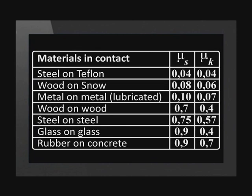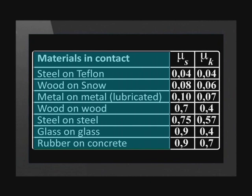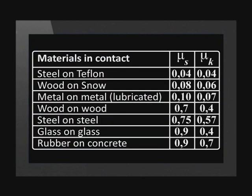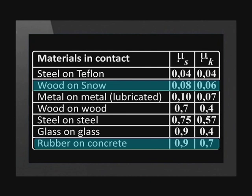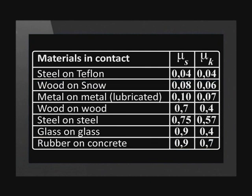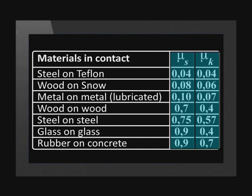Here are coefficients of static and kinetic friction for some pairs of surfaces. Notice that very smooth surfaces like wood and snow have lower coefficients of friction than rougher surfaces like rubber and concrete. Also notice that the coefficient for static friction is generally noticeably more than the coefficient for kinetic friction for the same pair of materials.